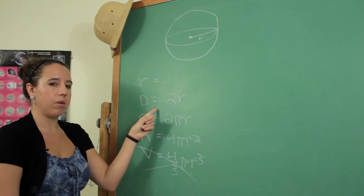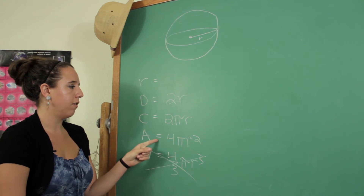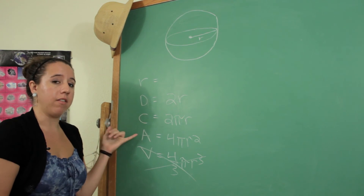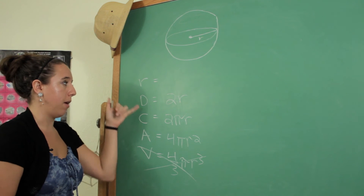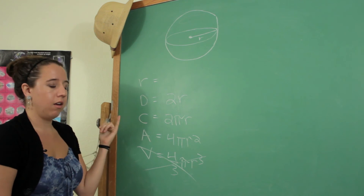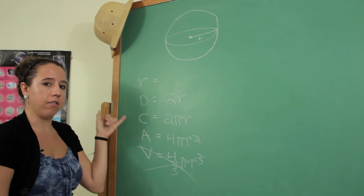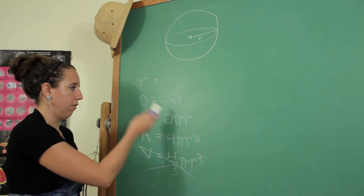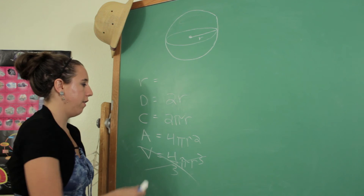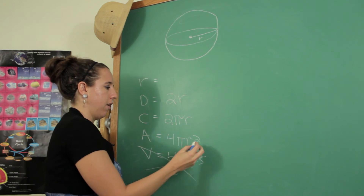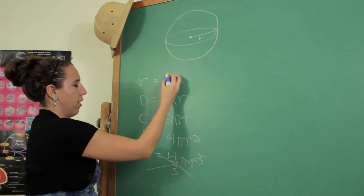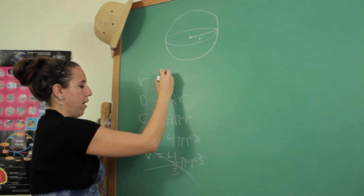We're trying to find R and we have three different ways we can try to find it. You have to be given one of the other quantities — D, C, or A: the diameter, circumference, or surface area — and just solve the equation for R. Let's pick the hardest one and say we're given the surface area, so we're basically just going to rearrange that.